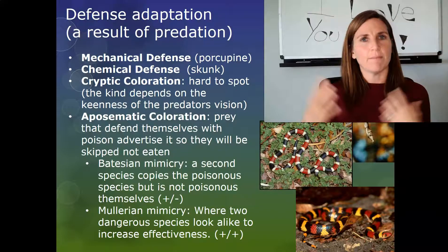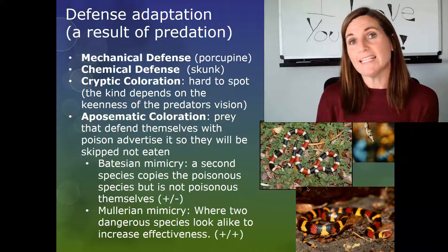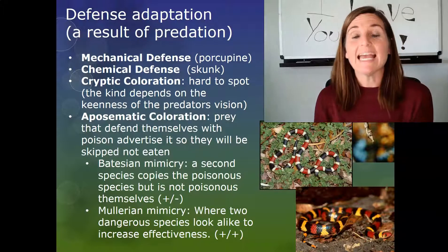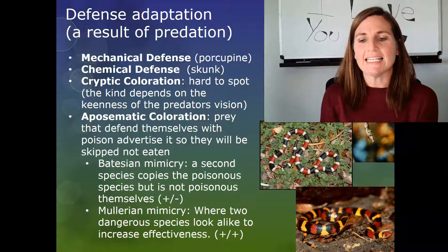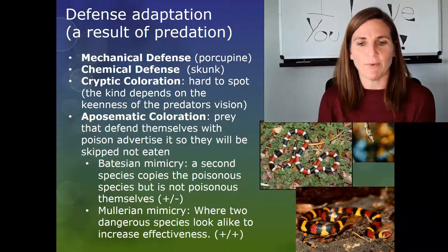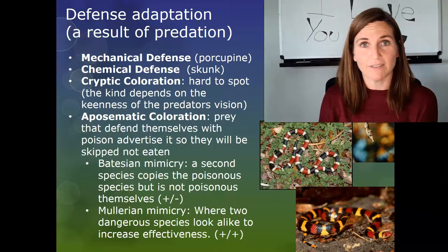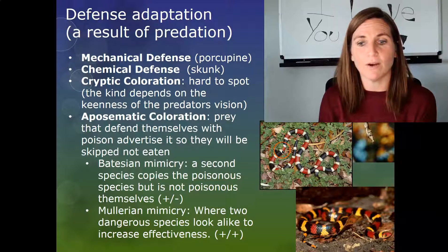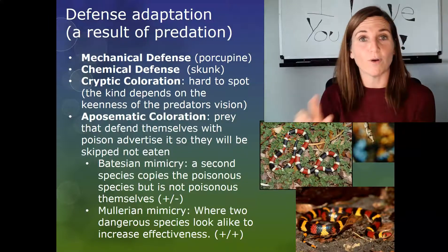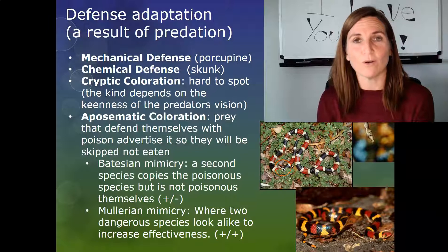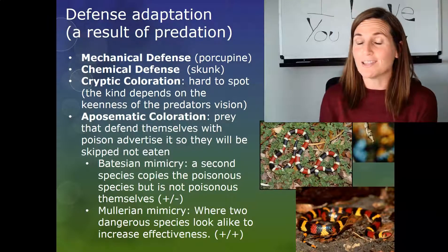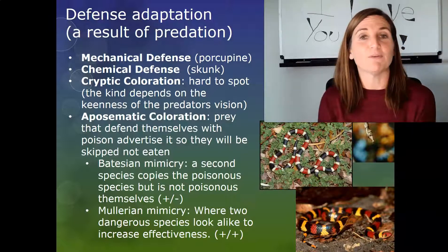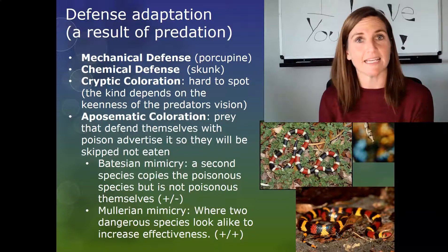A specific example: the king snake and the coral snake. King snakes are not dangerous at all; coral snakes are quite dangerous. Both have banded patterns of red, yellow, and black — but there's a difference you can remember with a rhyme: 'Red before yellow, you're one dead fellow; red before black, you're all right, Jack.' The coral snake has red bands before yellow bands; the king snake has red bands before black bands. So if you encounter one of these snakes, that rhyme can help you identify it.